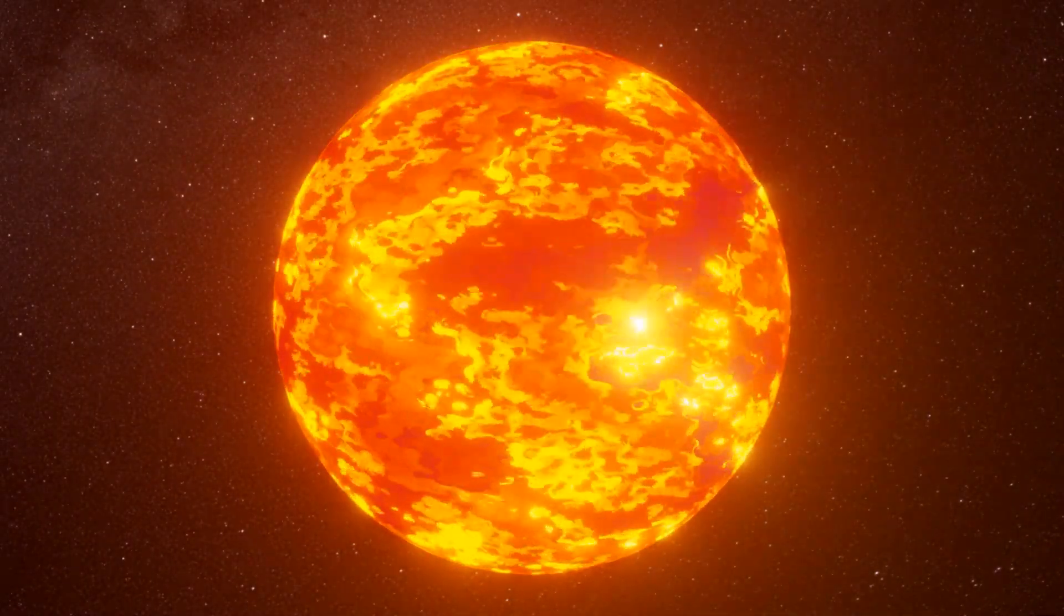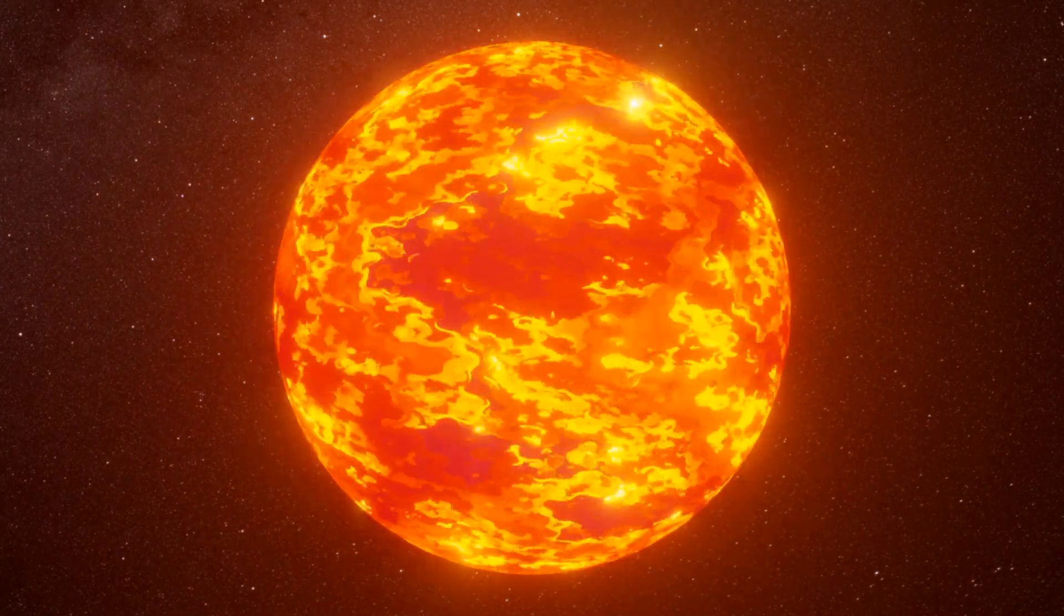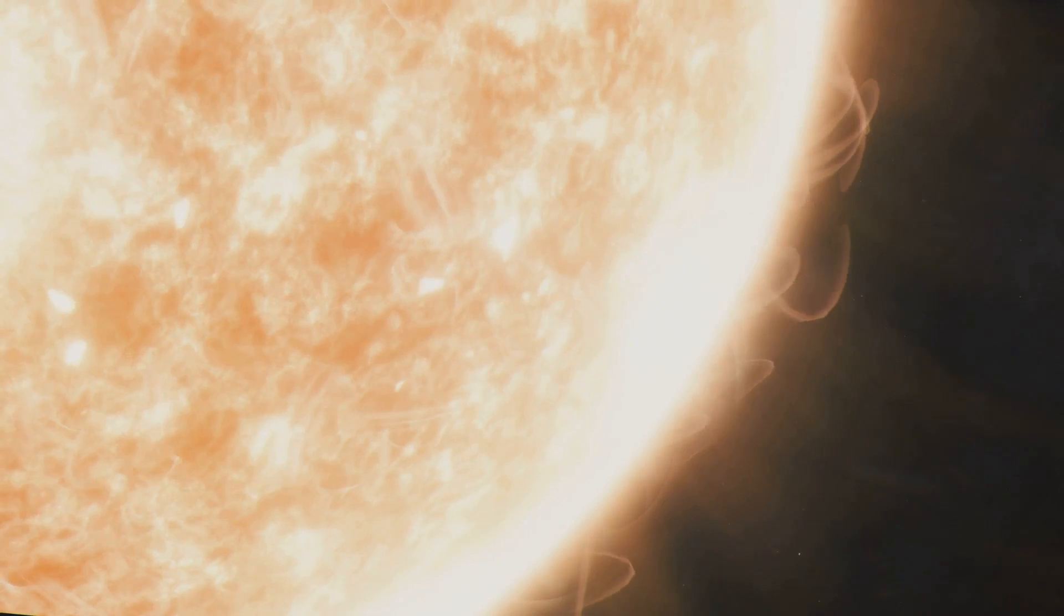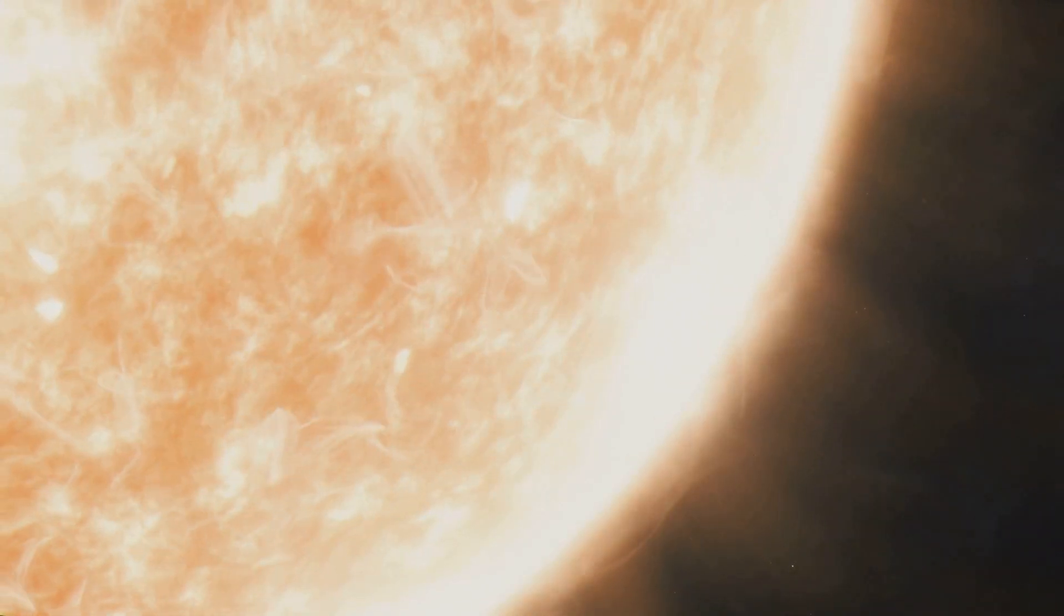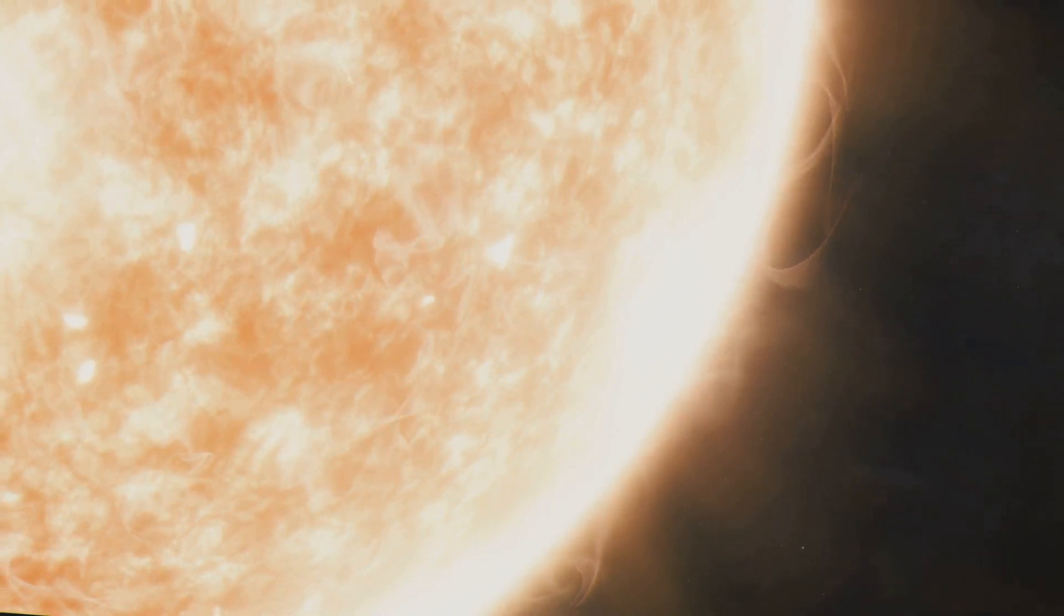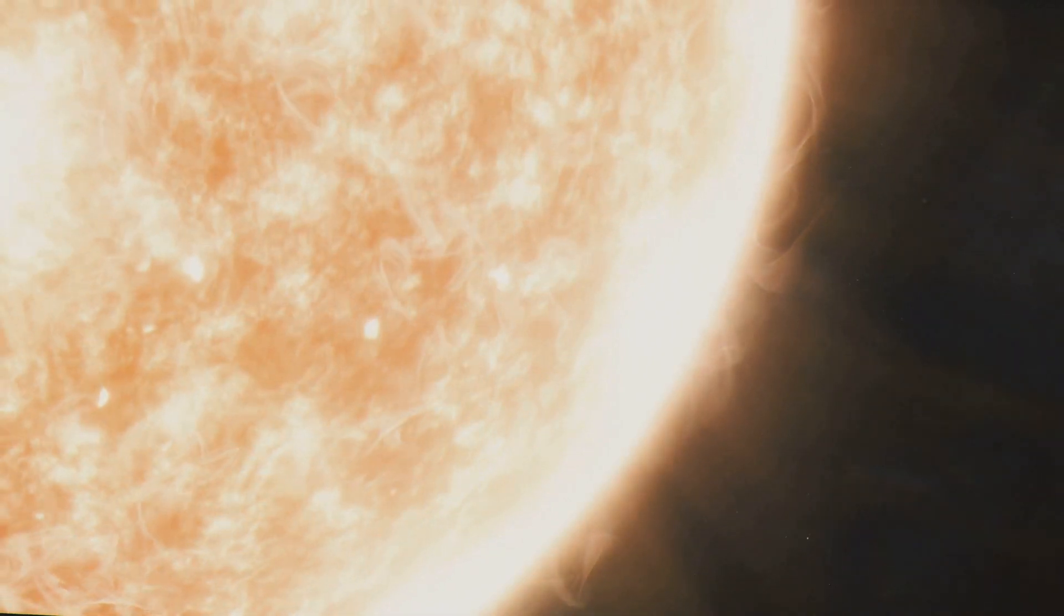After the solar wind escapes the Sun's surface, it doesn't just disappear into the vastness of space. Instead, it hurtles through space at speeds much faster than the normal solar wind. And if the conditions are just right, this stream of solar wind can head straight towards our home planet. So, what happens when the solar wind from a coronal hole reaches Earth?